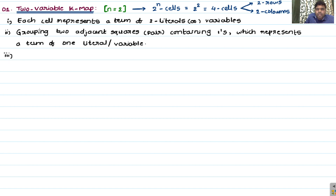We have four cells, two rows and two columns. Each cell represents a term of two literals or variables. When you group two adjacent squares, each box having two literals, pairing them gives one variable as a common factor — one single variable from that boolean expression. By seeing these sentences alone you won't get full clarity, so let's take an example.